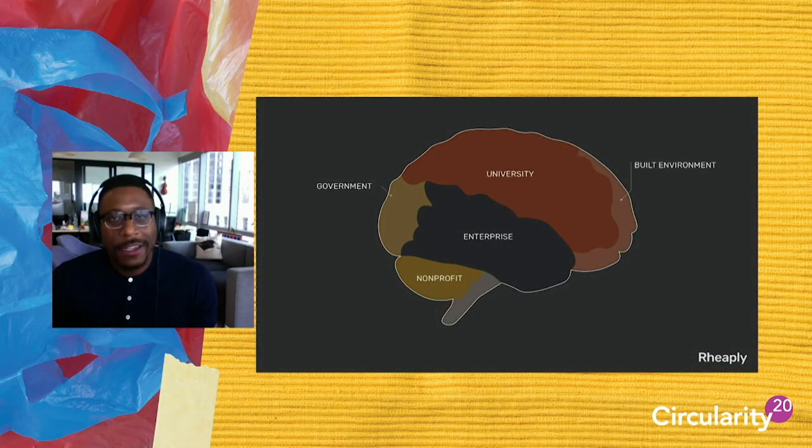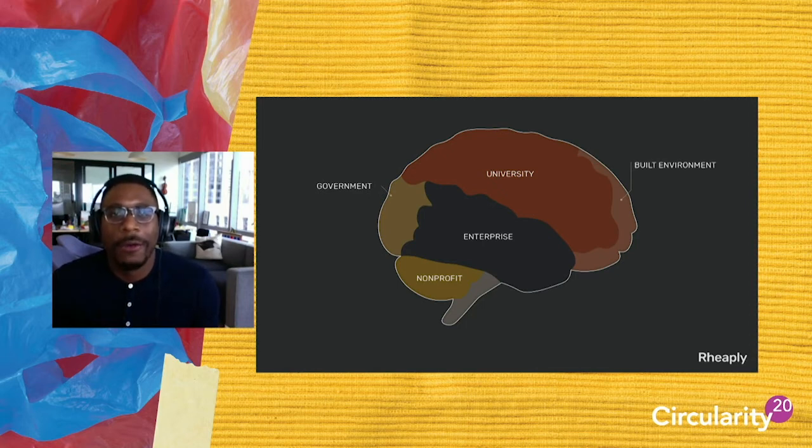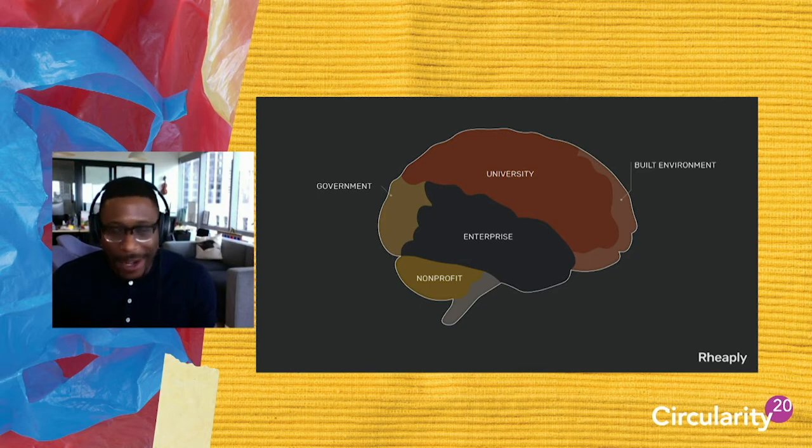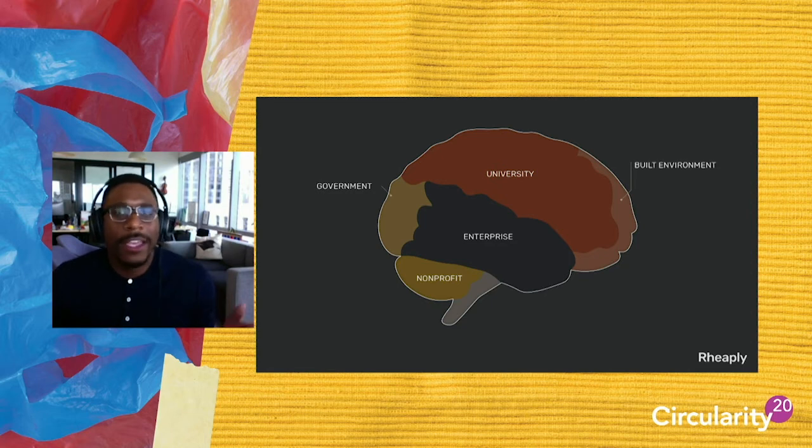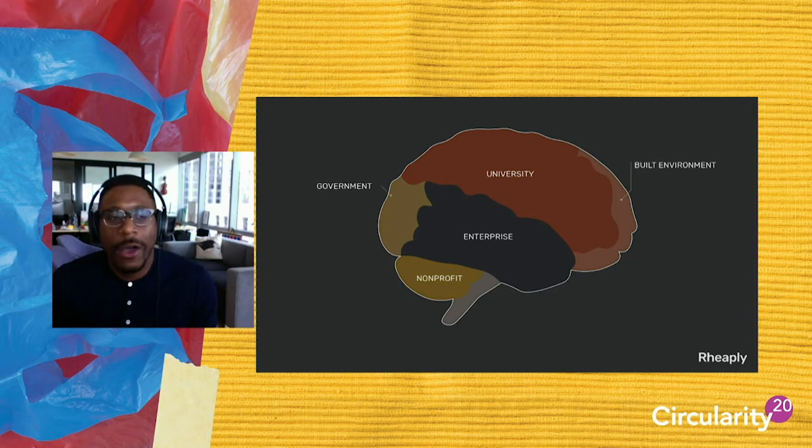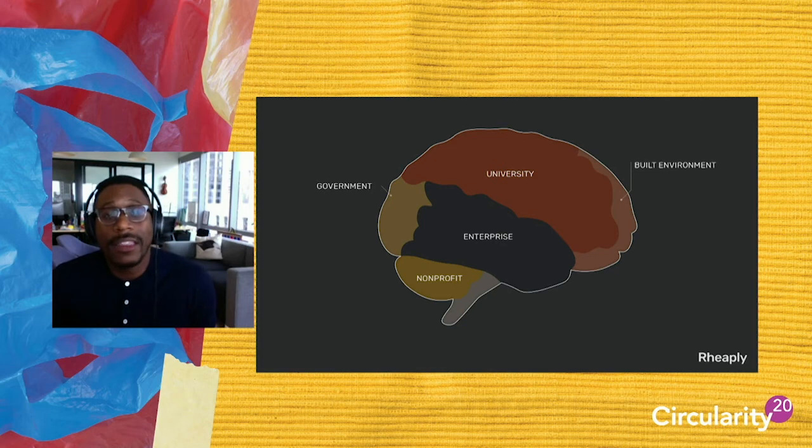As a young faculty member, I would have to, unfortunately, give the global circular progress to date a low grade, an F-minus to be exact. I'm harsh, I know. Today, the world is only 8.6% circular. And that's not because we haven't tried. We have. Here we are. That's because in order to scale a global circular economy, we must first build a connected economy, like the network of the brain.